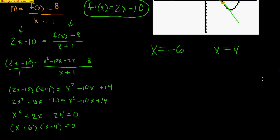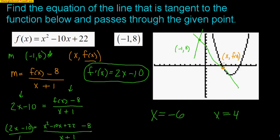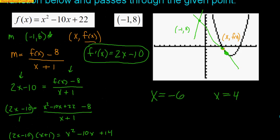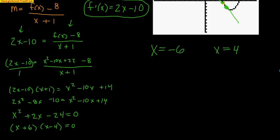So I have two points of tangency. The first is at x = 4, which I can see on the graph somewhere around there. The second is at x = -6, which is way off the graph. Both will give me different tangent lines that pass through the given point (-1, 8).